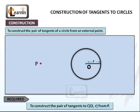Required: To construct the pair of tangents to C(O,r) from point P.